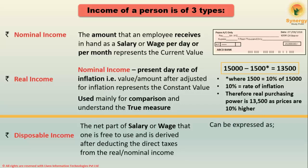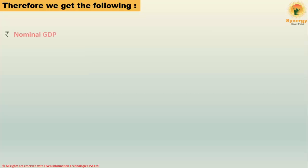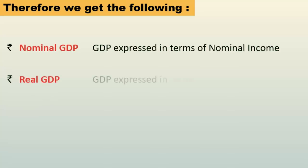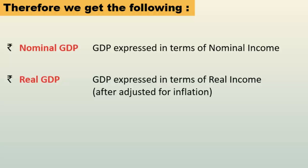Nominal disposable income would be 15,000 if that is what you currently receive. If you want to calculate real disposable income, 13,500 would be that amount. From these concepts, we arrive at nominal GDP and real GDP. Nominal GDP is GDP expressed in terms of nominal income, and real GDP is expressed in terms of real income — that is, after adjusting for inflation.